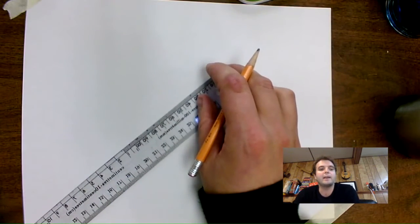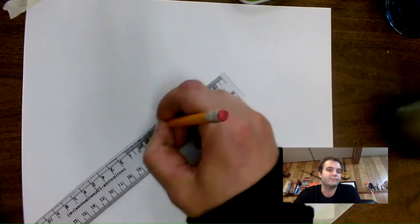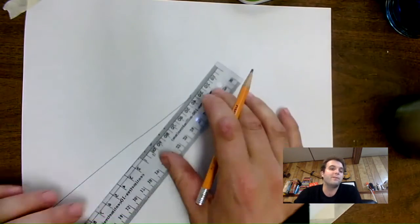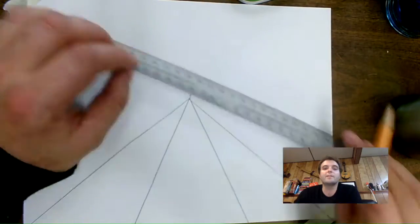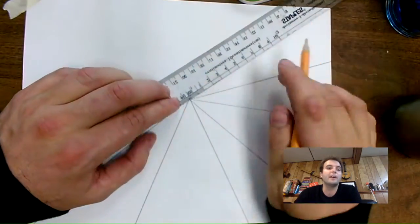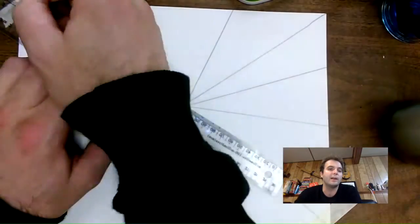Start by making a dot in the middle of your page and connecting lines to the outside using a ruler. You're going to put four lines on the bottom of your page, two on the side, four on the top, and two on the other side for a total of 12 lines.